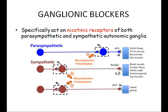Moving on from antimuscarinic blockers, we now go to the anti-nicotinic blockers. The anti-nicotinic blockers are of two types: ganglionic blockers and neuromuscular blockers. Ganglionic blockers specifically act on nicotinic receptors present on both parasympathetic and sympathetic autonomic ganglia.